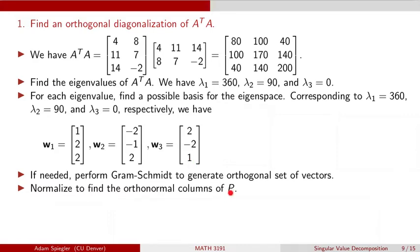To find the orthogonal matrix P that allows us to diagonalize A transpose A, we need columns of orthonormal vectors. Since we have three distinct eigenvalues, these three eigenvectors are already orthogonal — W1 and W2 are orthogonal, W2 and W3 are orthogonal, and W1 is orthogonal to W3. So we don't need to perform Gram-Schmidt here. If you had a repeated eigenvalue, you may get eigenvectors that are not orthogonal and would need to apply Gram-Schmidt.